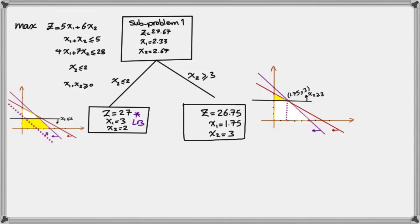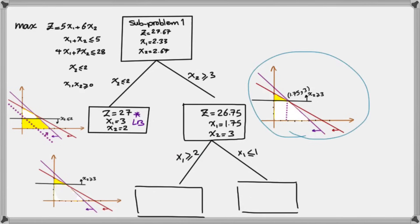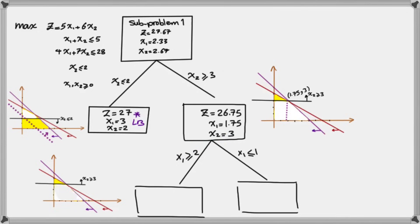We add two new branches with constraints x1 ≤ 1 or x1 ≥ 2, adding them to the original problem along with the x2 ≥ 3 constraint. When I add x1 ≥ 2 to the previous feasible region, there is no feasible region left — this sub-problem has no feasible solution, so we stop that branch. Then for the x1 ≤ 1 branch, I add that constraint to the image from the previous step, which cuts off a small triangle on the right-hand side of the x1 = 1 line, leaving the left-hand side as the feasible region.